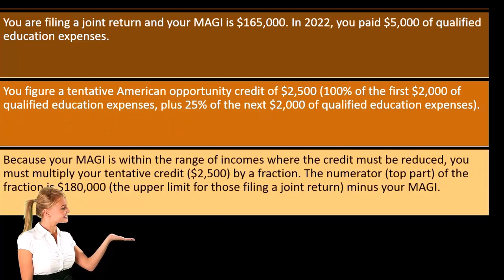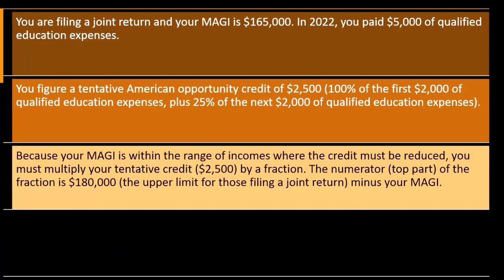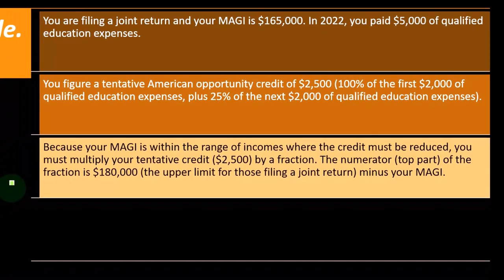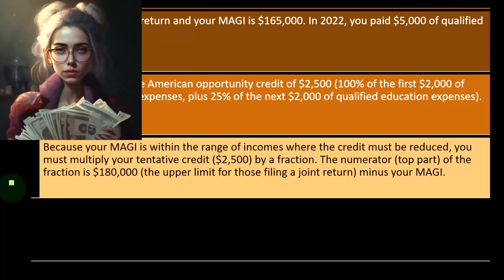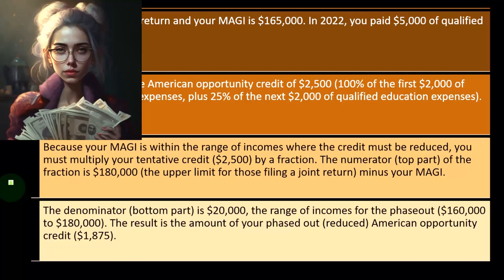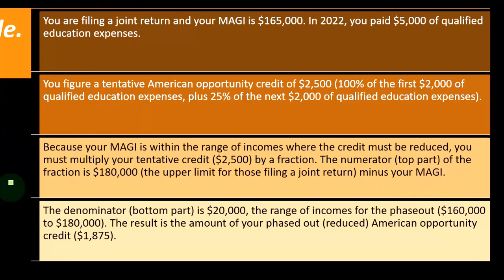Because your MAGI is within the range where the credit must be reduced, you must multiply your tentative credit of $2,500 by a fraction. The numerator is $180,000 — the upper limit for joint filers — minus your MAGI of $165,000, which equals $15,000. The denominator is $20,000, the range of income for the phase-out ($160,000 to $180,000). The result is your reduced American Opportunity Credit: $1,875.